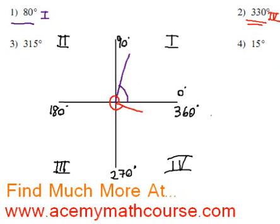Very similar is 315 degrees. Starting over here we almost get to 330 but not quite. So 315 is also in the fourth quadrant.